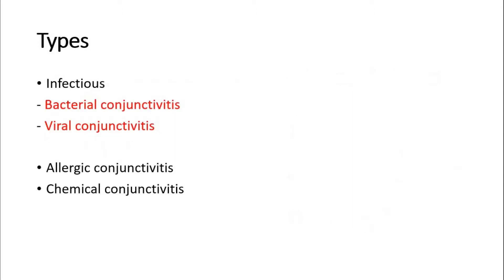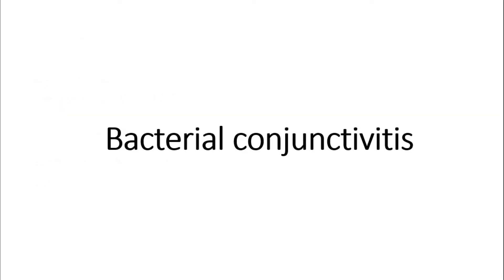There are a few types of conjunctivitis, which can be divided into infectious, allergic, or chemical conjunctivitis. In this video, I'll talk more about bacterial and viral conjunctivitis, which are the infectious types. I'll start first with bacterial conjunctivitis.